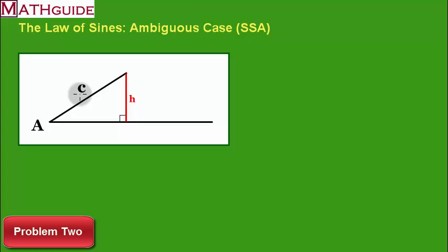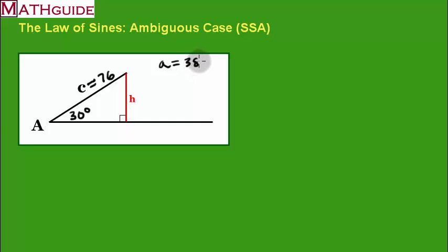Here's problem number two. Let's say we're given the length c is 76. Let's say the angle is 30. And let's say that little a is equal to 38. So what do you do first? Again, you first figure out how tall is the triangle. That's the height. So, I'm going to take the sine of 30 degrees is equal to opposite h over hypotenuse 76. Again, I cross multiply, and I'm going to get h is equal to 76 sine of 30. So h turns out to be exactly 38.